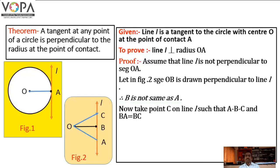Now, take a point C on line L such that AB is congruent to BC, and point B lies between A and C, that is A-B-C. In figure 2, point C is taken on line L such that segment AB is congruent to segment BC and B is between A and C.